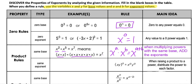The other product rule is when two things are being raised to the same exponent. For example, if we have 4 and x both being raised to the second power, I can separate that into 4 squared times x squared, which gives me 16x squared. When we raise a product to a power, we can distribute that power to each factor.